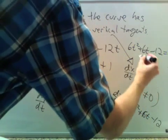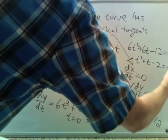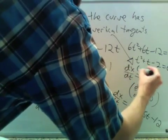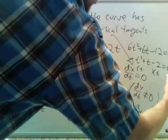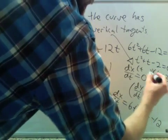We can divide out the 6s. And we can factor this. Let's see. We have a plus here and a minus there.